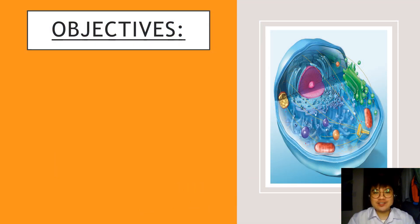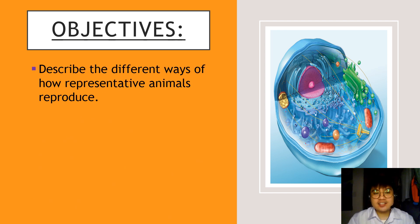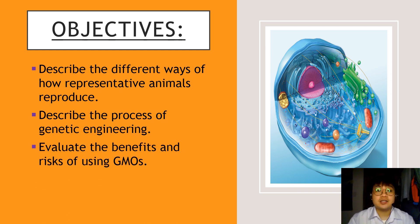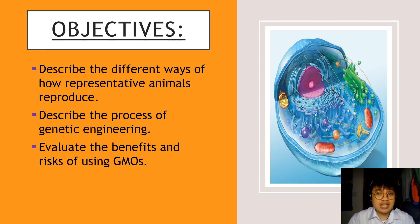For this video lesson, here are our objectives. Number one is to describe the different ways of how representative animals reproduce. Number two is to describe the process of genetic engineering. And number three, to evaluate the benefits and risks of using GMOs or genetically modified organisms. For this lesson, we will try to uncover the concept of reproduction and its relationship to genetic engineering.